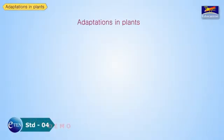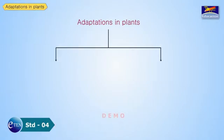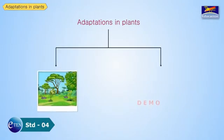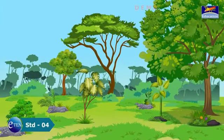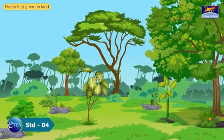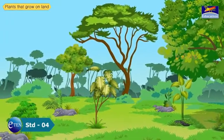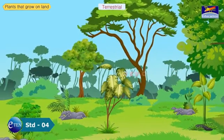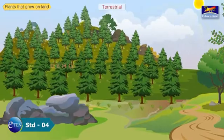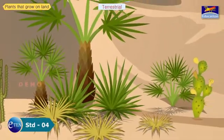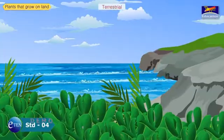Adaptation in plants. Plants can be divided into two main groups on the basis of their habitat: plants that grow on land and plants that grow in water. Plants that grow on land are called terrestrial plants. There are different types of terrestrial plants depending on the place they grow in.